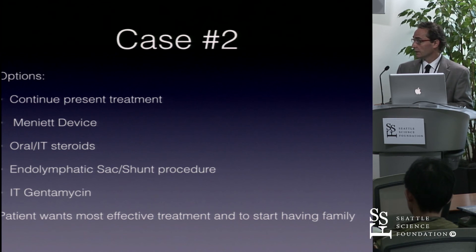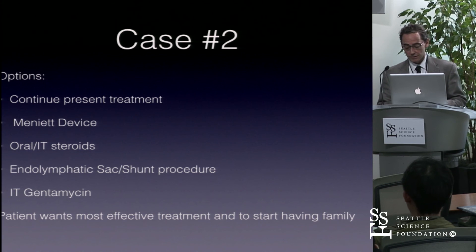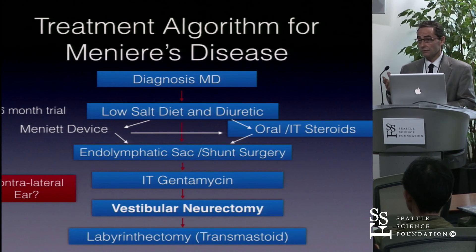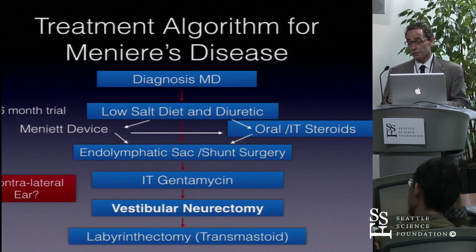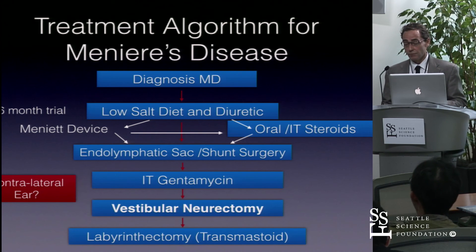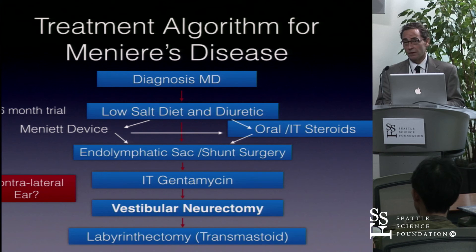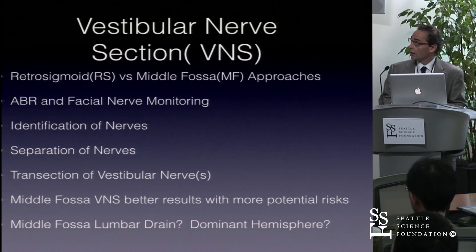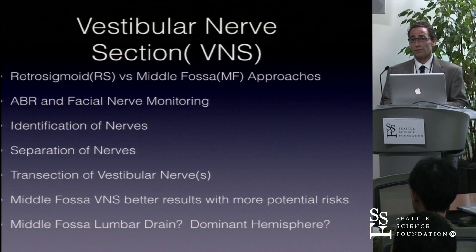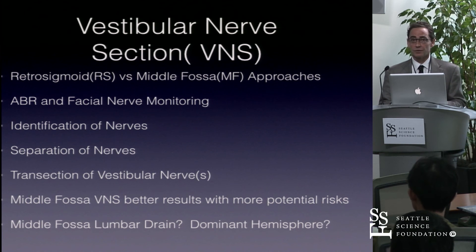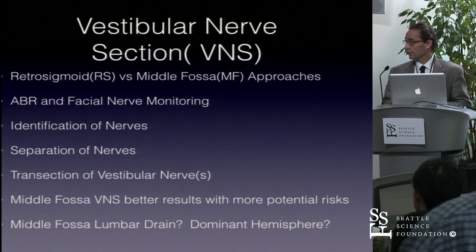The patient wants the most effective treatment and wants to start having a family. I wanted to present the option of vestibular nerve section. In a patient of this age, nerve section may be very helpful, as patients tend to resolve their symptoms well following the operation and could be considered in a young patient. Whether to use a retrosigmoid approach or middle fossa approach depends on the surgeon. Intraoperative ABR and facial nerve monitoring are performed. The cochlear nerve and vestibular nerves must be identified and separated, then the vestibular nerve is transected and a portion resected to complete the neurectomy.